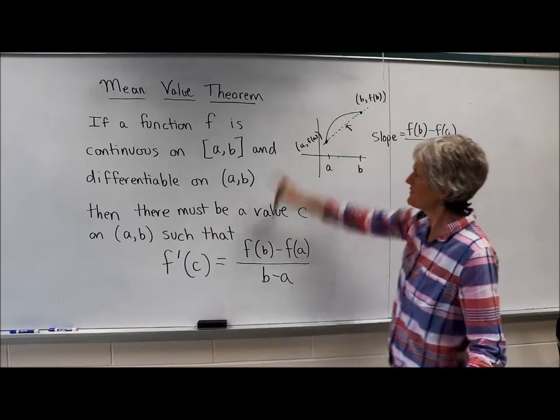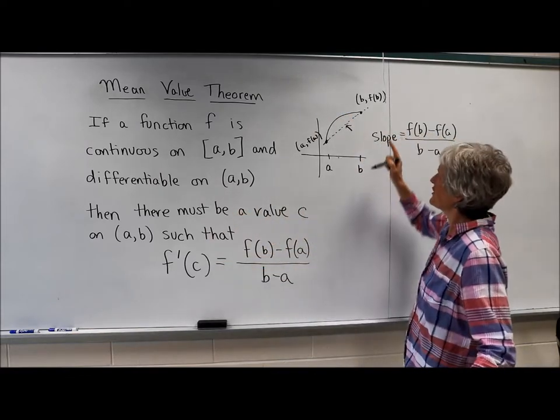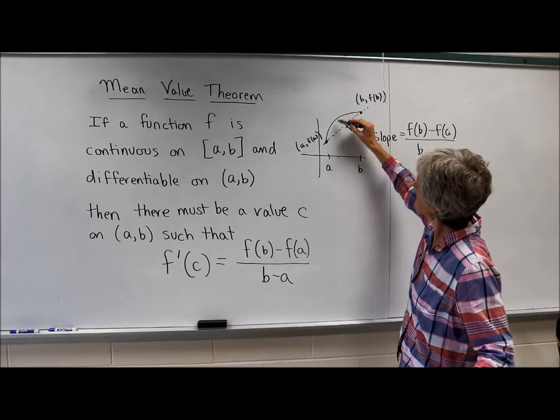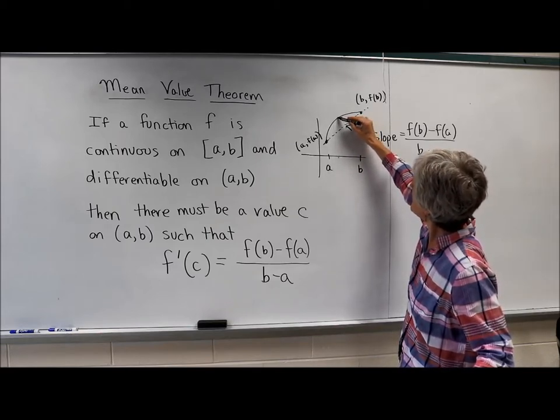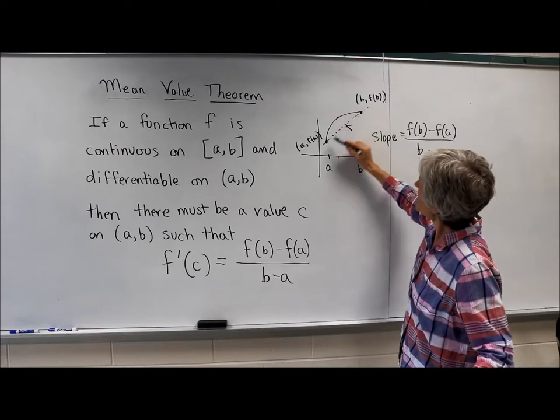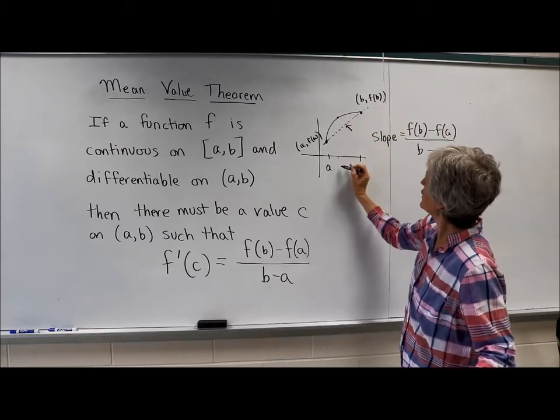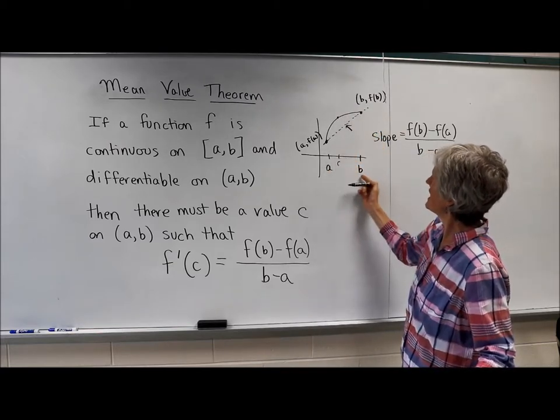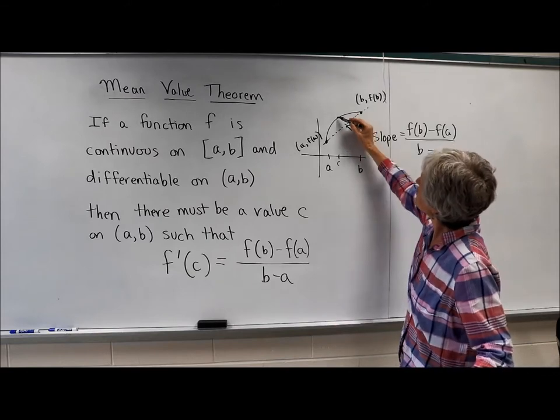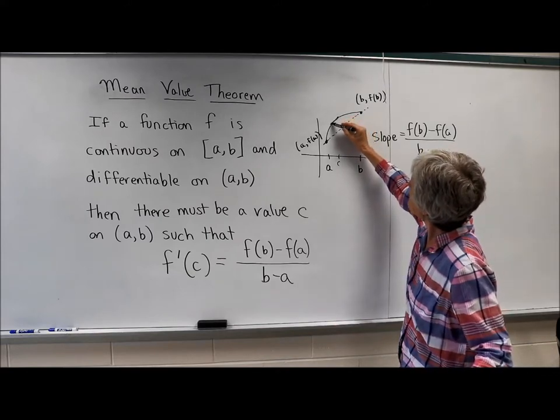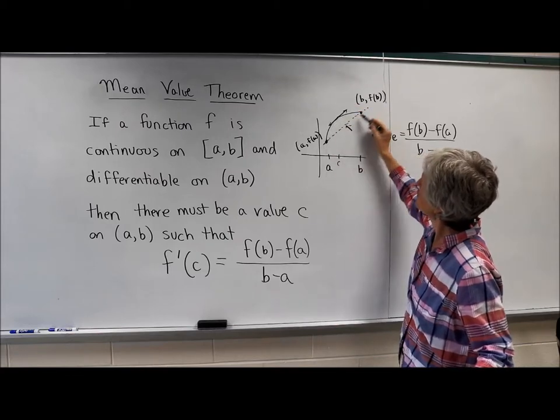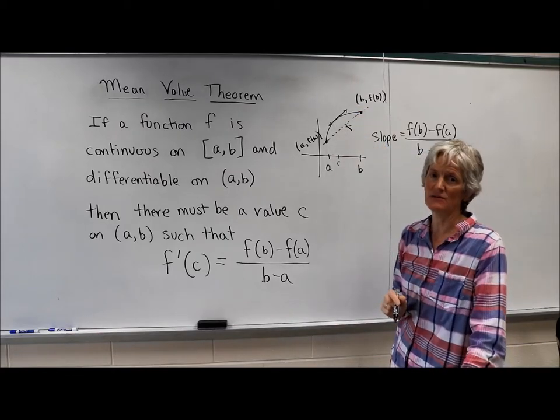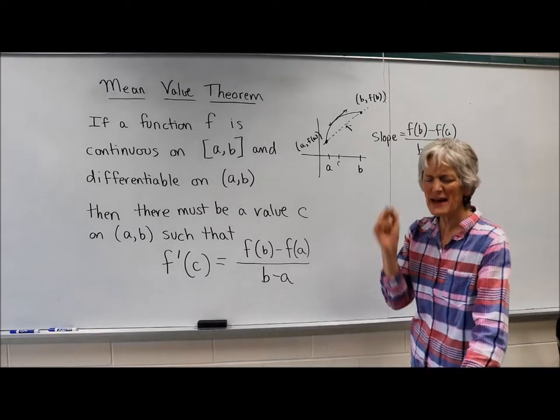So this mean value theorem says there's got to be at least one point where there's got to be one c value in between a and b where the slope at that point, in other words the derivative, is exactly equal to the slope of that secant line. It makes sense.